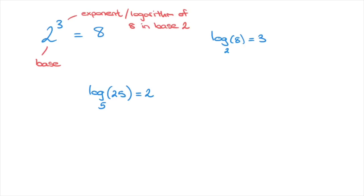And we can also write this equality in its exponential form. Indeed, we can write 5 to the power of 2 is equal to 25. Both of these statements are completely equivalent.